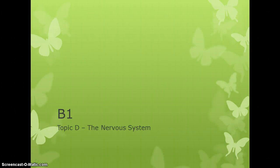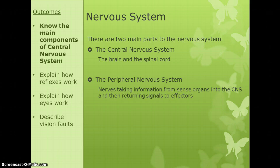Welcome to the video on the nervous system, topic B1D. Make sure you take some notes and ask questions on Monday. There are two main parts of the nervous system: the central nervous system, abbreviated to CNS, made up of your brain and spinal cord, and the peripheral nervous system — the nerves at the edges that take information from sense organs back to your CNS and then to your effectors.